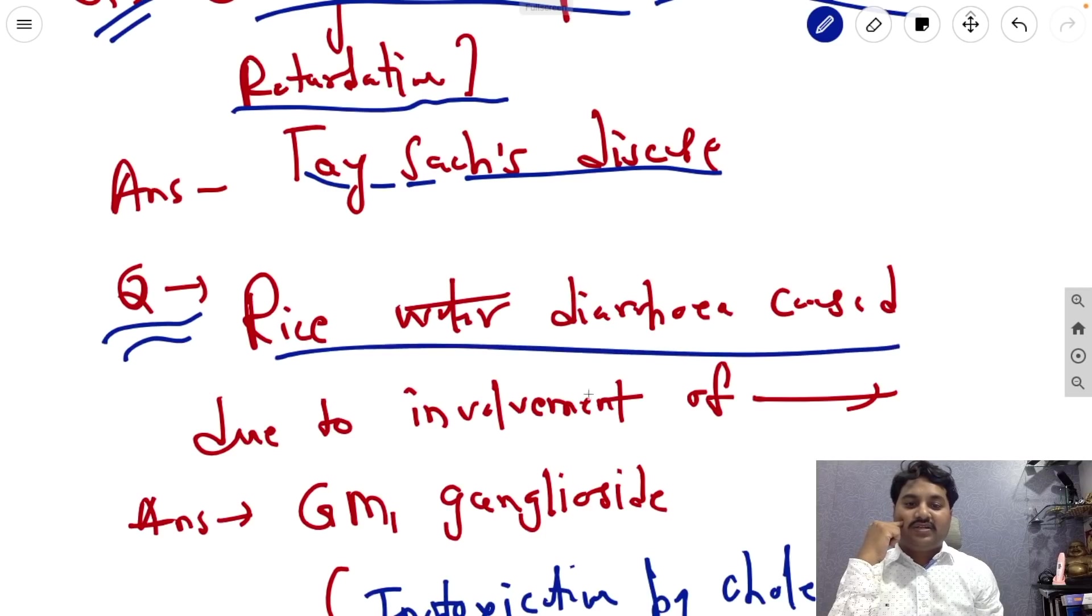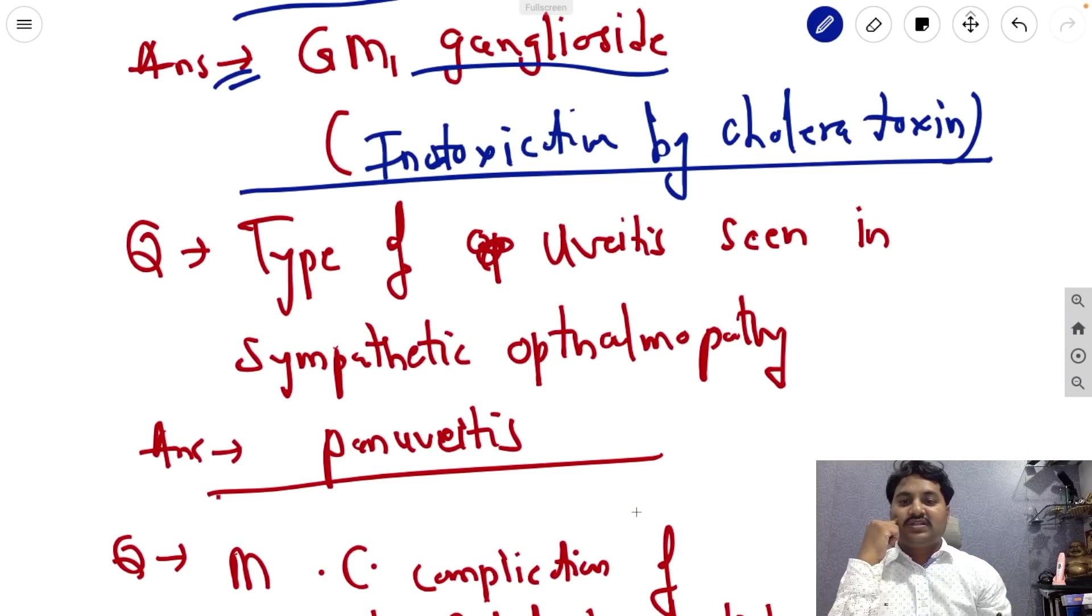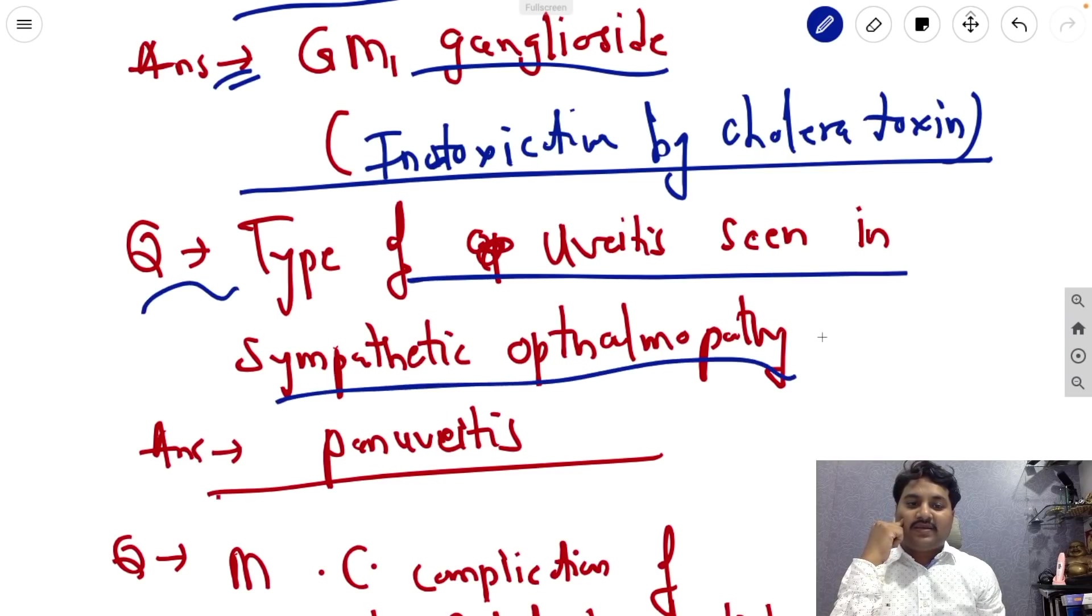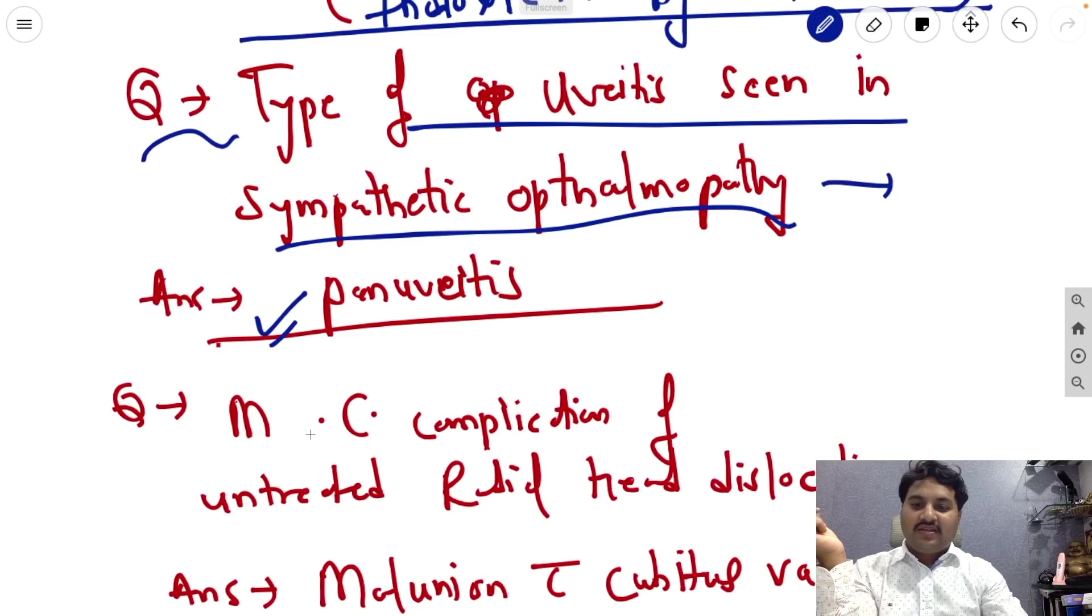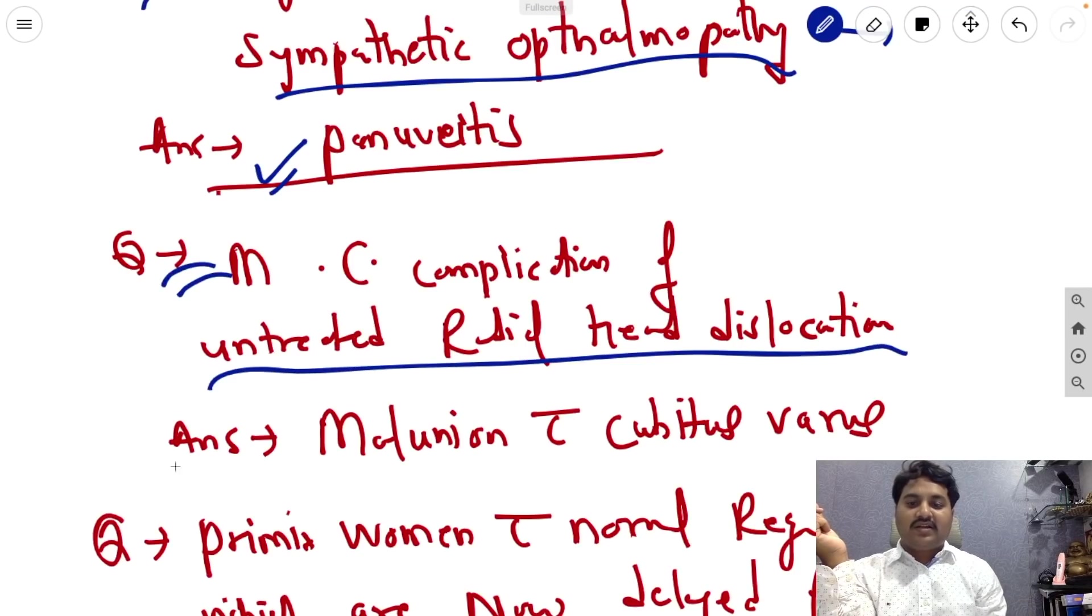Next question, rice water diarrhea caused due to the involvement of, answer is GM1 ganglioside, that is toxin intoxication of the cholera toxin. Next question, type of uveitis seen in sympathetic ophthalmopathy, the answer is panuveitis. Next question, most common complication of untreated radial head dislocation, the answer is malunion with cubitus varus.